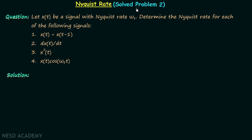Let us solve problem number 2 based on the calculation of Nyquist rate. According to the problem, there is a time domain signal x(t) having the Nyquist rate equal to ω_s, and we need to determine the Nyquist rate for each of the following 4 signals. Let's begin our calculation of Nyquist rate for the first signal.